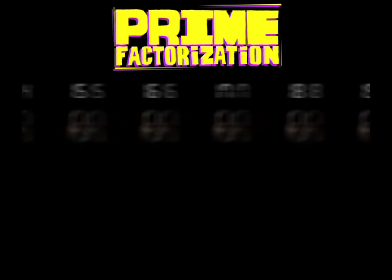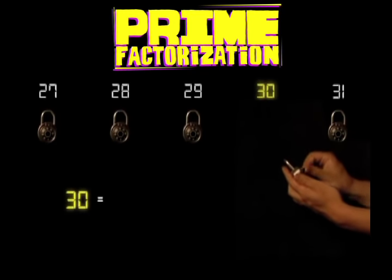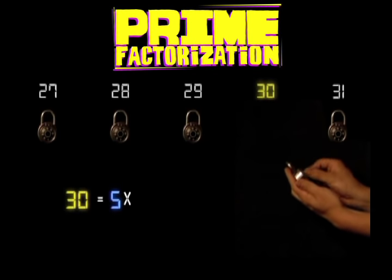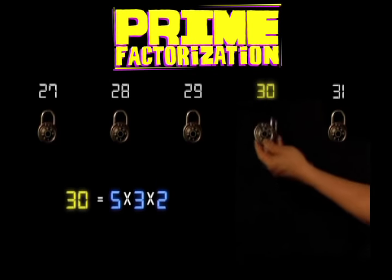Over 2000 years ago, Euclid showed every number has exactly one prime factorization, which we can think of as a secret key. It turns out that prime factorization is a fundamentally hard problem.